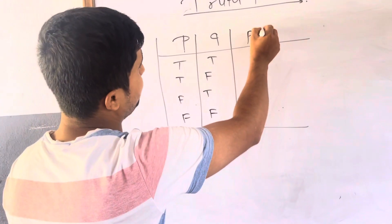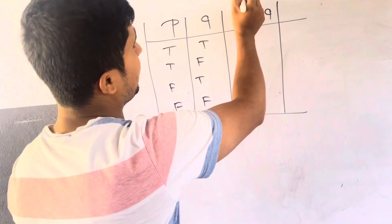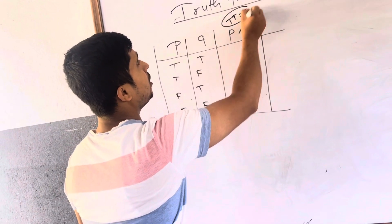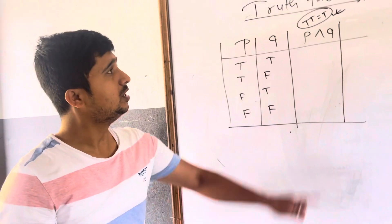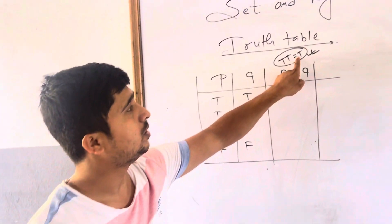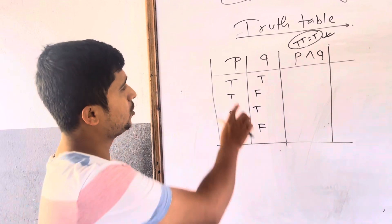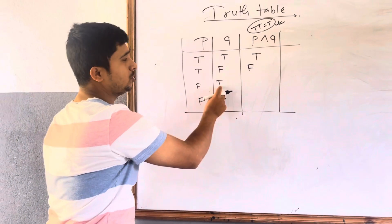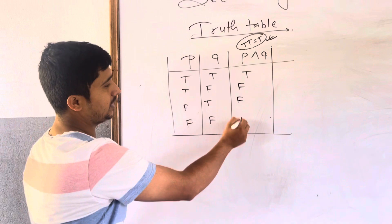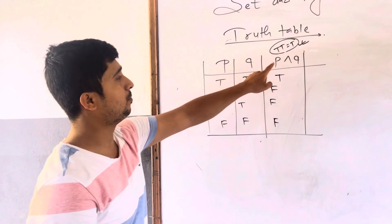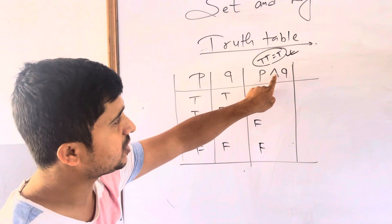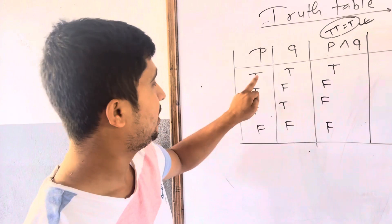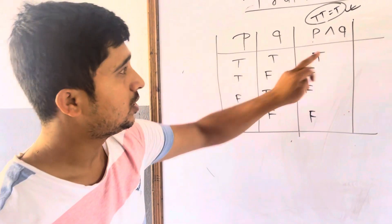For conjunction P∧Q, remember: if both are true, the result is true; otherwise false. So: true∧true = true, true∧false = false, false∧true = false, false∧false = false. Only when both P and Q are true is the conjunction true; otherwise false.